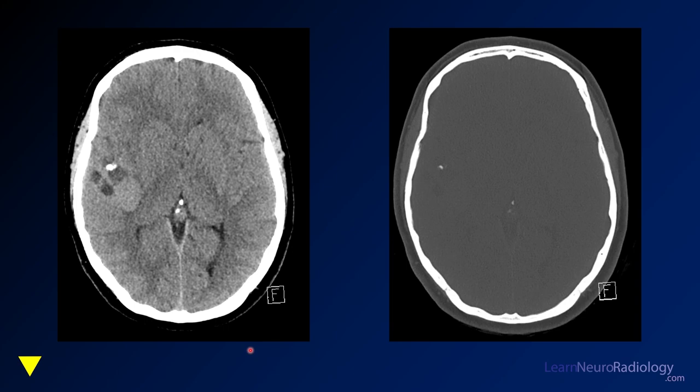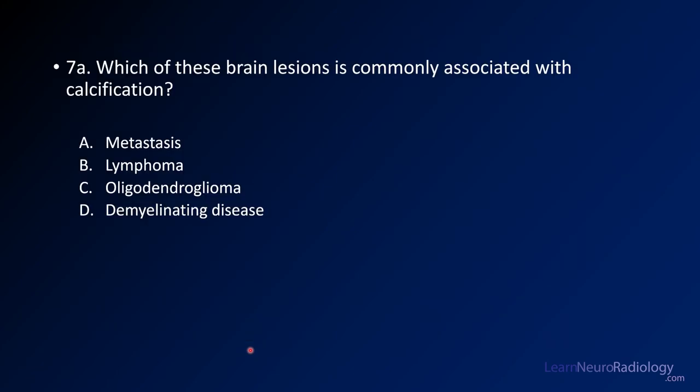Now we're going to have a question. Which of the following brain lesions is commonly associated with calcification? Is it metastases, lymphoma, oligodendroglioma, or demyelinating disease?